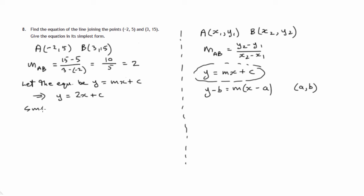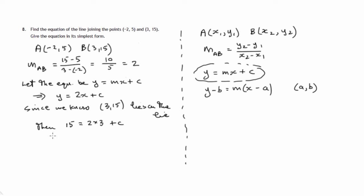Since we know 3, 15 lies on the line, the coordinate values x equals 3 and y equals 15 will work in this equation. So that means 15 equals twice 3 plus c. From this we can get c equals 15 minus 6. Taking 6 from both sides gives c equals 15 minus 6, which is 9. So the equation we're after is y equals 2x plus 9. And that's that.